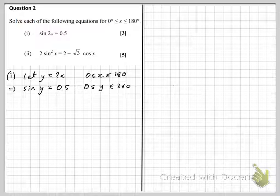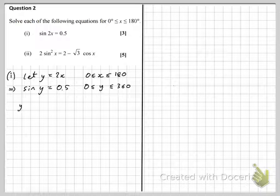So now we have our recast version of the problem. We're solving sine of a thing equals 0.5 for values of that thing between 0 and 360. So we're in familiar territory now.